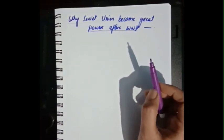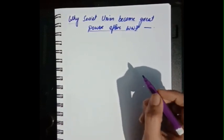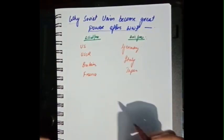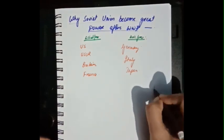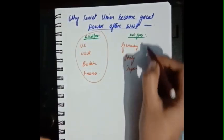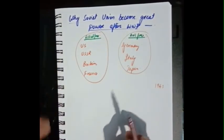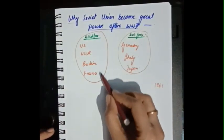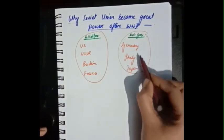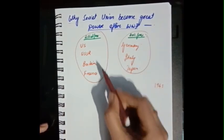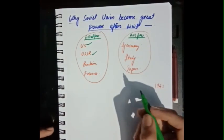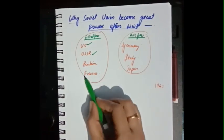Now let us discuss why the Soviet Union became a great power after World War II. In World War II, that is in 1945, the Allied forces defeated the Axis forces. The Allied forces comprising USA, USSR, Britain, and France were the winners, defeating Germany, Italy, and Japan. Among the Allied forces, USA and USSR became superpowers.